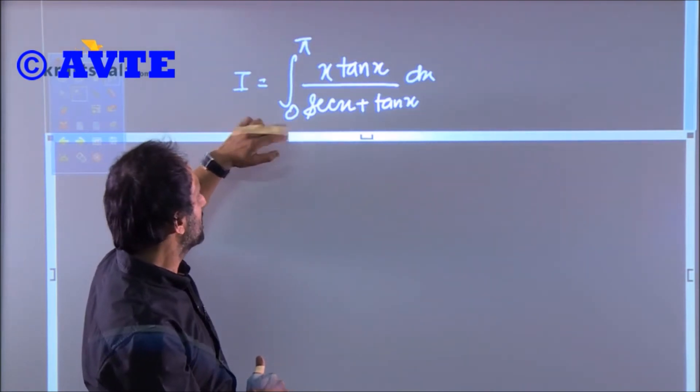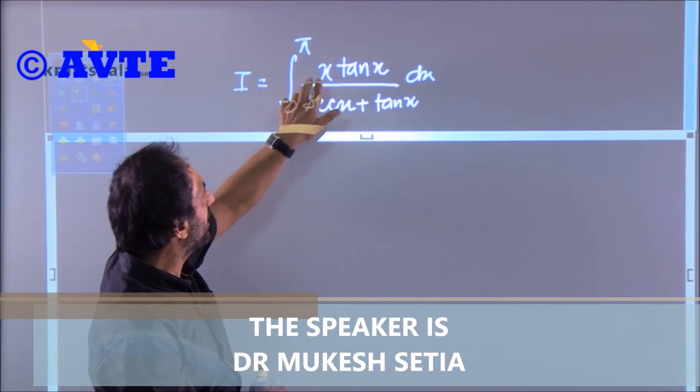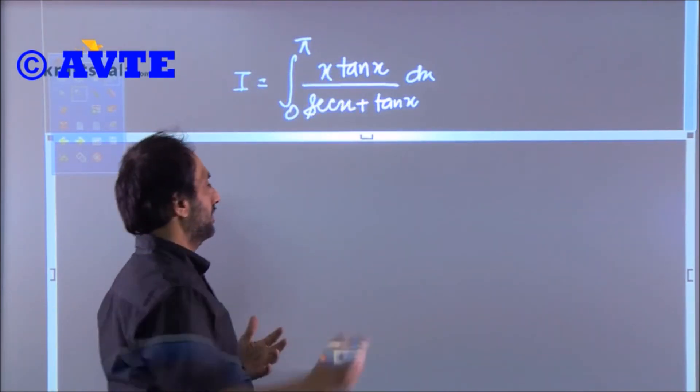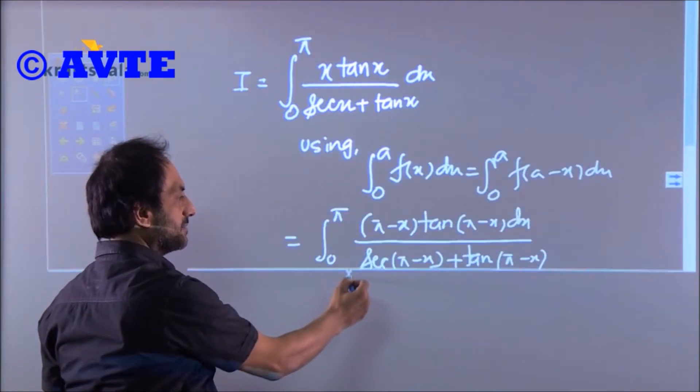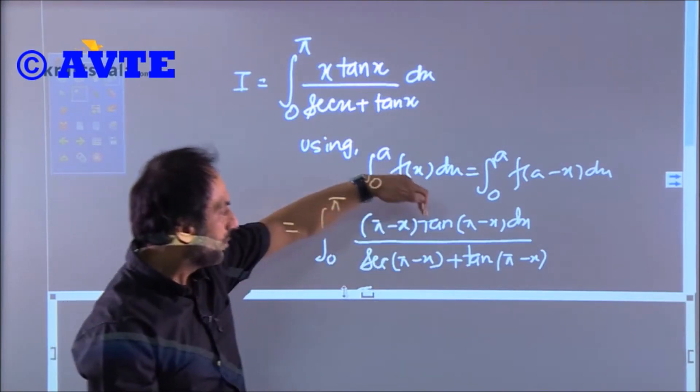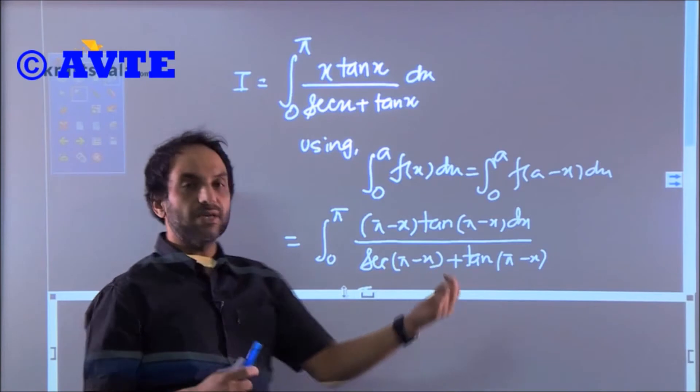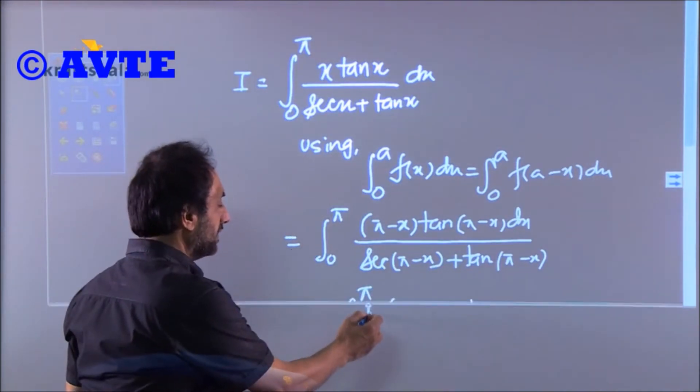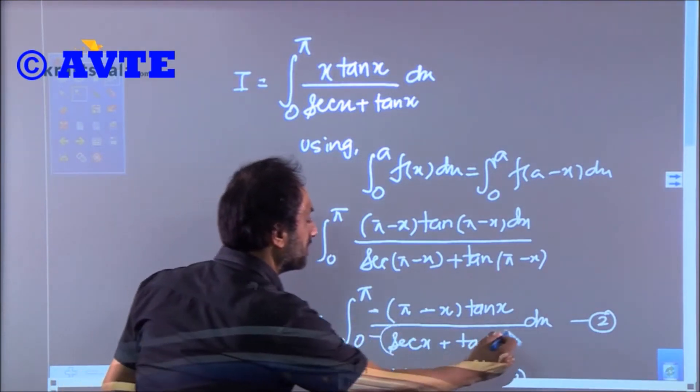Yes, if you apply zero to a, obviously you have to apply π everywhere. So we get (π - x) tan(π - x). Now what will happen? The (π - x) stays. What is tan(180 - θ)? That is -tan θ. What is sec(180 - θ)? That is -sec θ. We can take negative common from the numerator and negative common from the denominator.